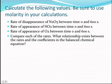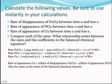They say to calculate the following values using molarity: the rate of disappearance for N₂O₅ between 0 and 600 seconds, and the rate of appearance for NO₂ and O₂ between 0 and 600 seconds. To get the rate, we need the change in molarity over the change in time. Since the data table only gives moles, we convert to molarity using the 3-liter container volume. So we take the moles at 600 seconds over 3 liters minus the moles at 0 seconds over 3 liters, divided by 600 minus 0.